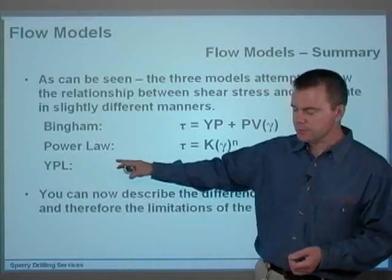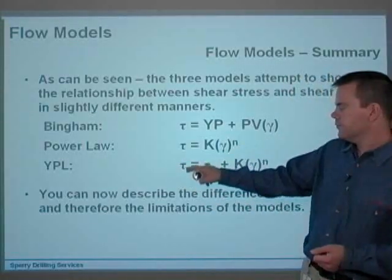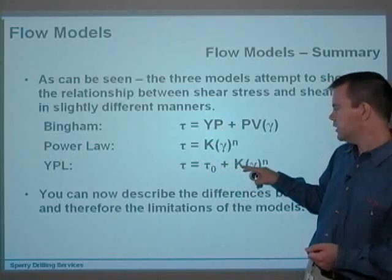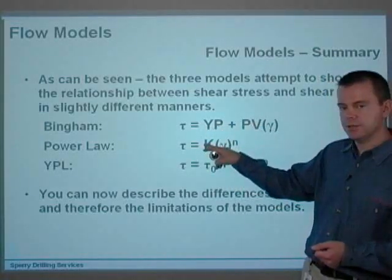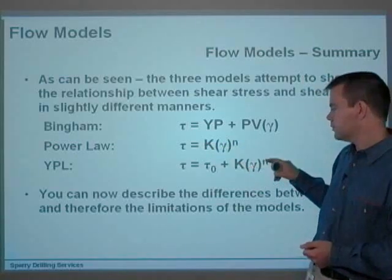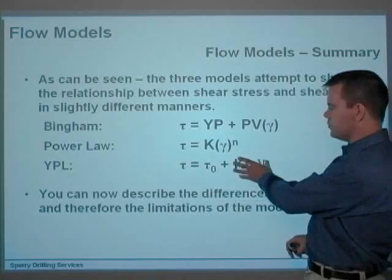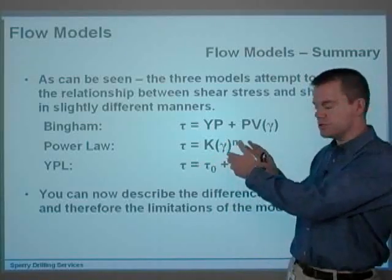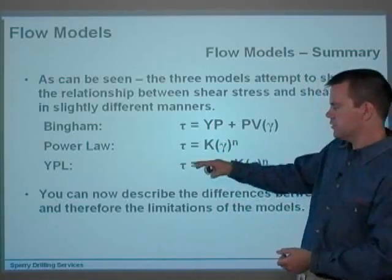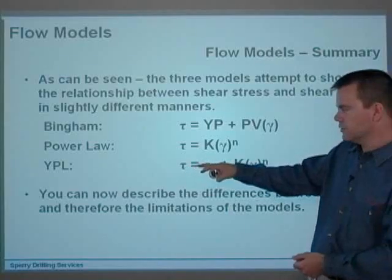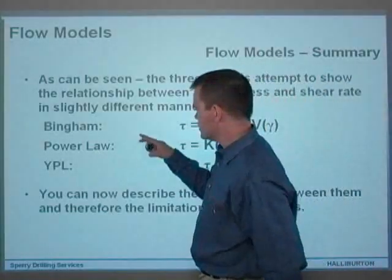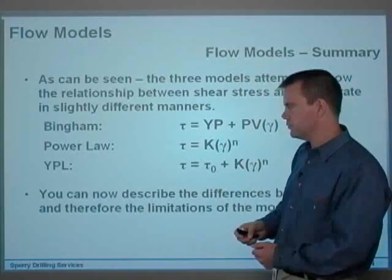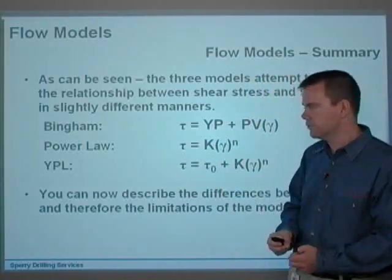The yield power law, or the Herschel Bulkley model, is: Tau equals Tau-zero, which is the same as YP, plus K — which is similar to PV or K in Power Law — times Gamma to the power of N. So you've got the Power Law part and the overall structure similar to Bingham. It's got the advantages of both models. It will describe 100% of the fluids in the oil field, whereas both of the others combined only describe 0.5% of all the fluids you might come across.